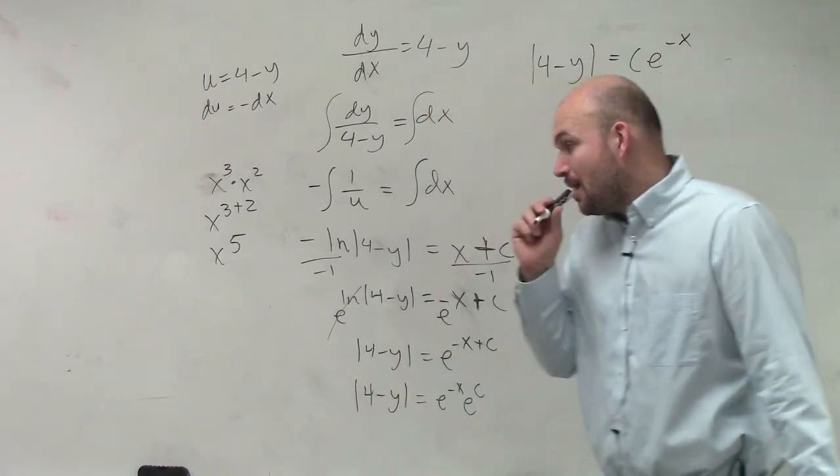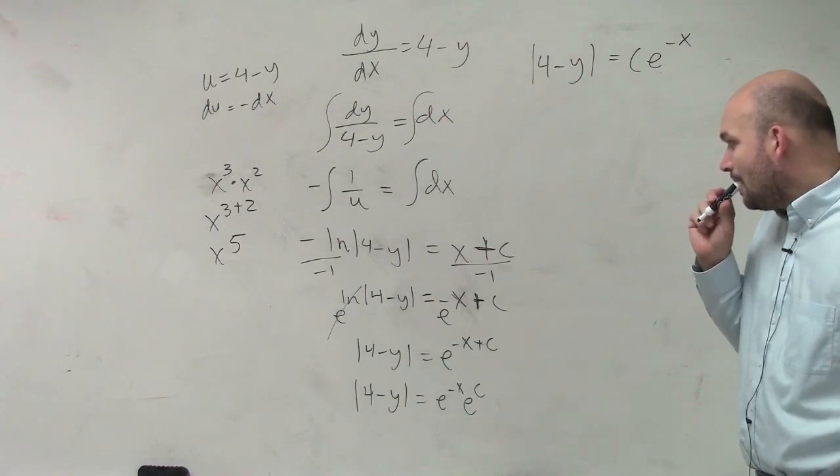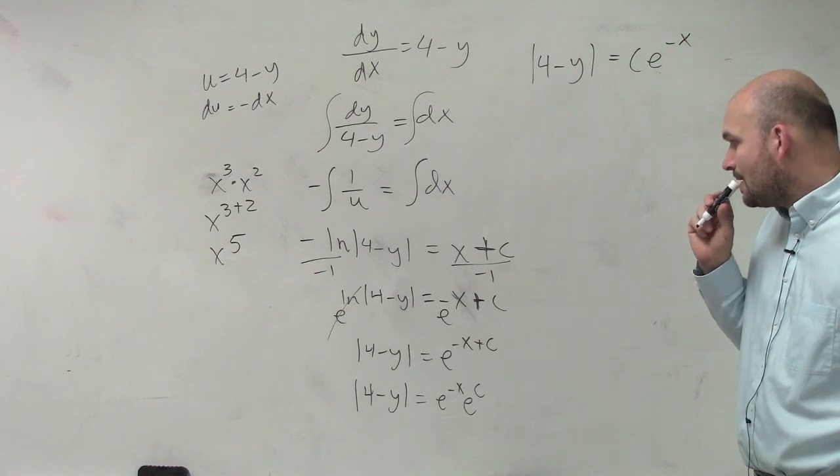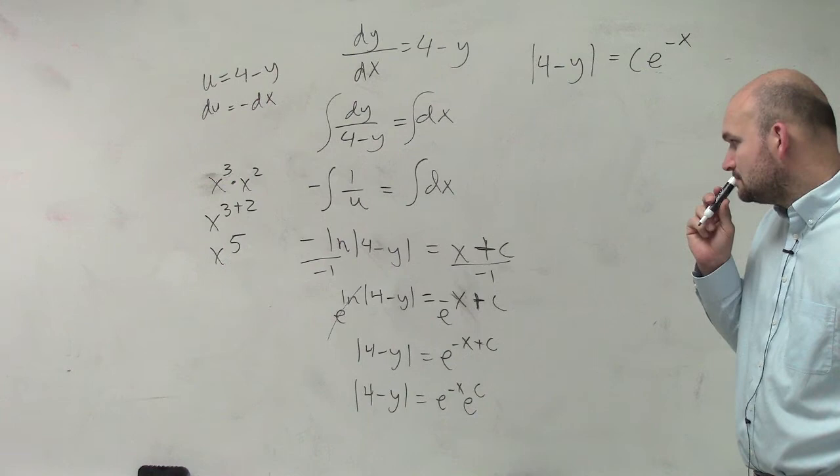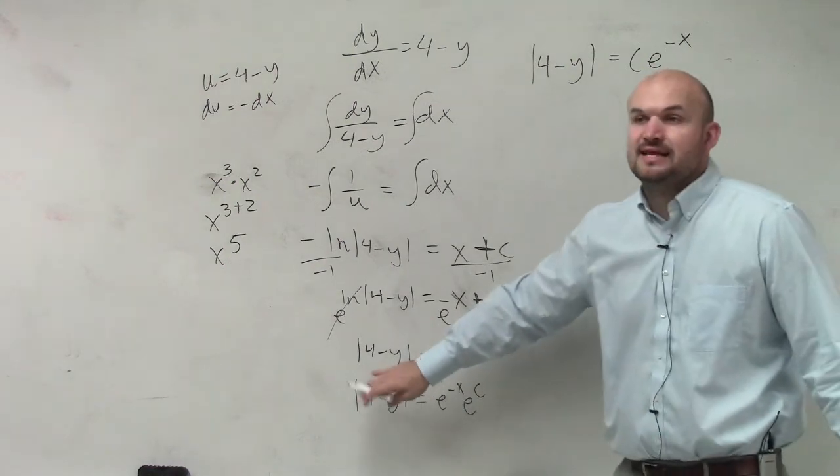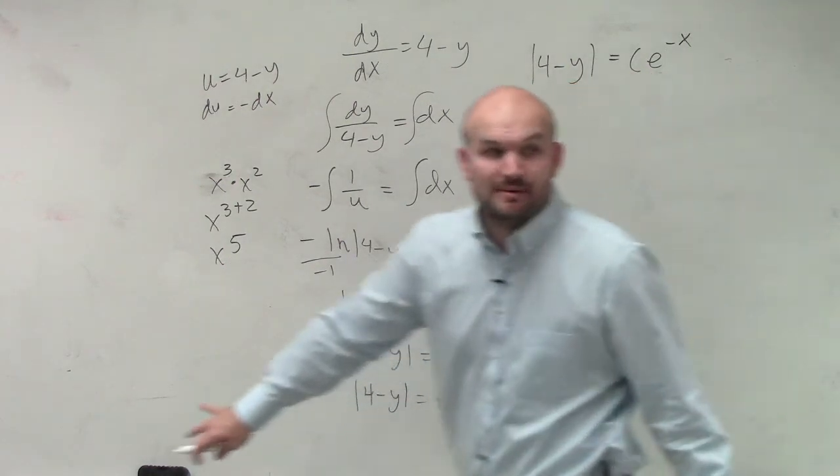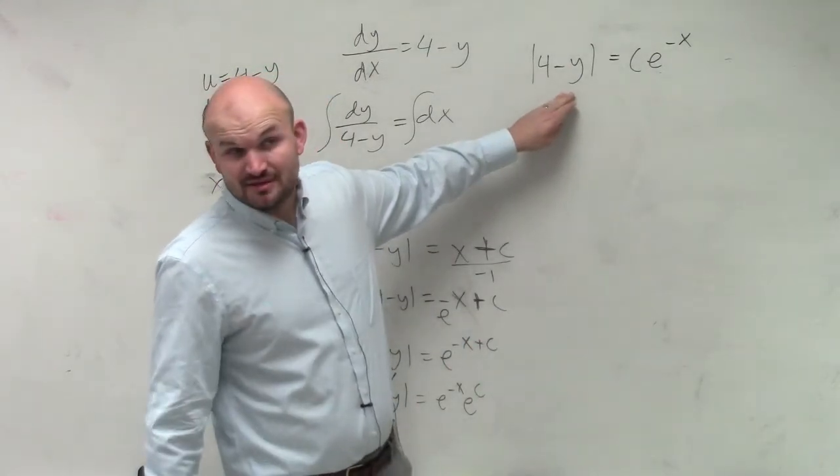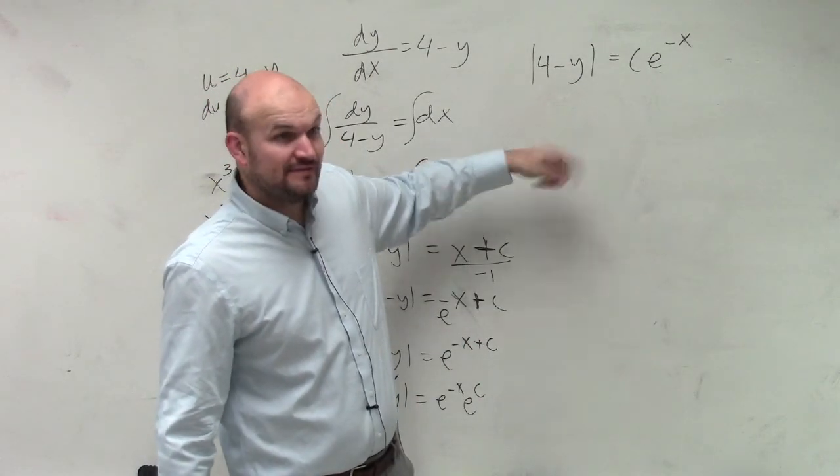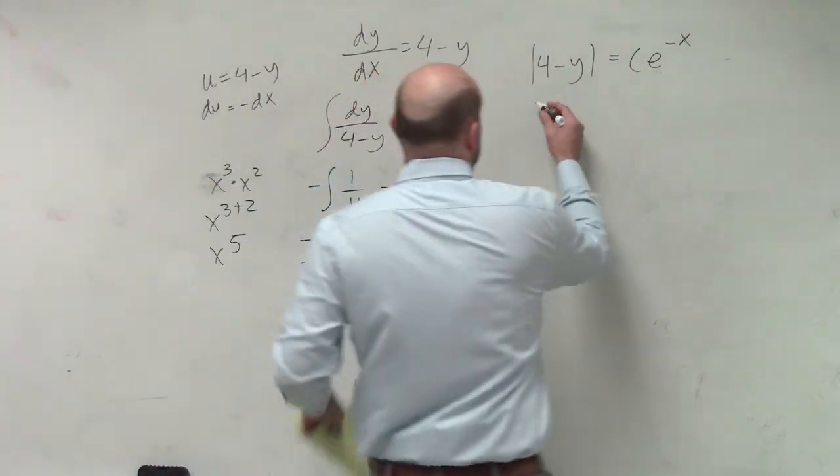Student question: So, we distributed... Well, we didn't distribute, but we took the negative 4 and put it on the other side. Can we do that with any constant that's in front of the y? Yeah, because you want to isolate the absolute value. Because if you guys remember in Algebra 2, when we solve absolute value functions, we have to create two cases. We have to create the positive case and the negative case.